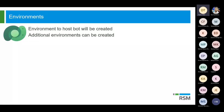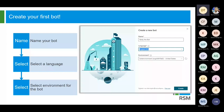So when you first sign in and you create a new bot, a default environment is actually created. Now if you need to, you can also use previously created environments or add additional environments by going to the Power Platform Admin Center. And once you create your first bot, you need to enter a name for your bot, select a language, and then select that pre-created environment or point it to a different environment as well. Pretty simple so far.